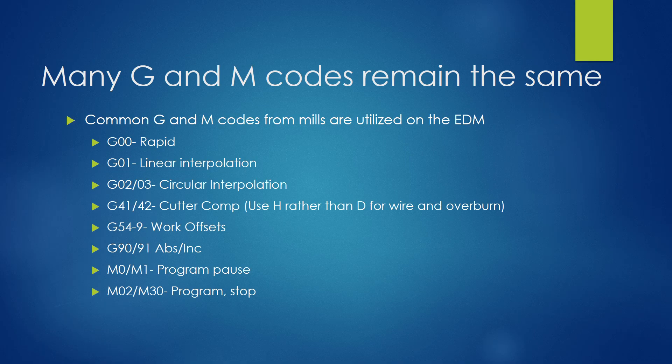There are many new G and M codes, but there are also many similar G and M codes. Rapid motion, linear interpolation, circular interpolation, the G02 versus G03, cutter compensation G41 being left, G42 being right, cutter comp is going to be the same. The H is going to be our value rather than D for calling up our wire comp because it's not a cutter compensation. It's actually wire plus our overburn. So that's a little different.